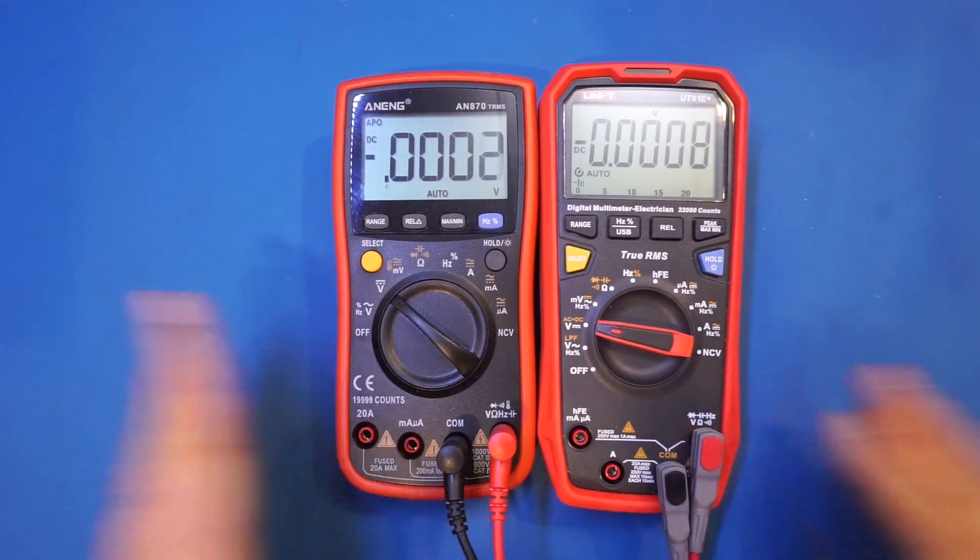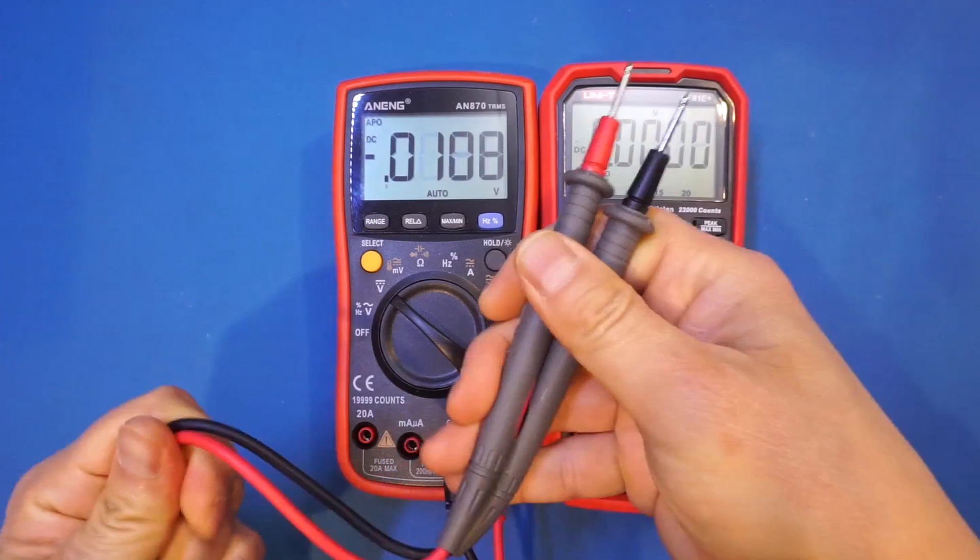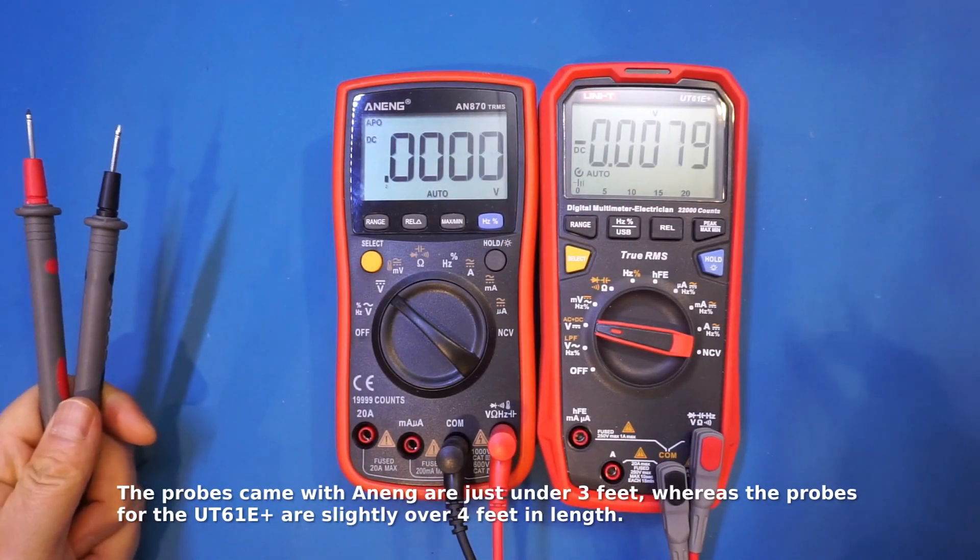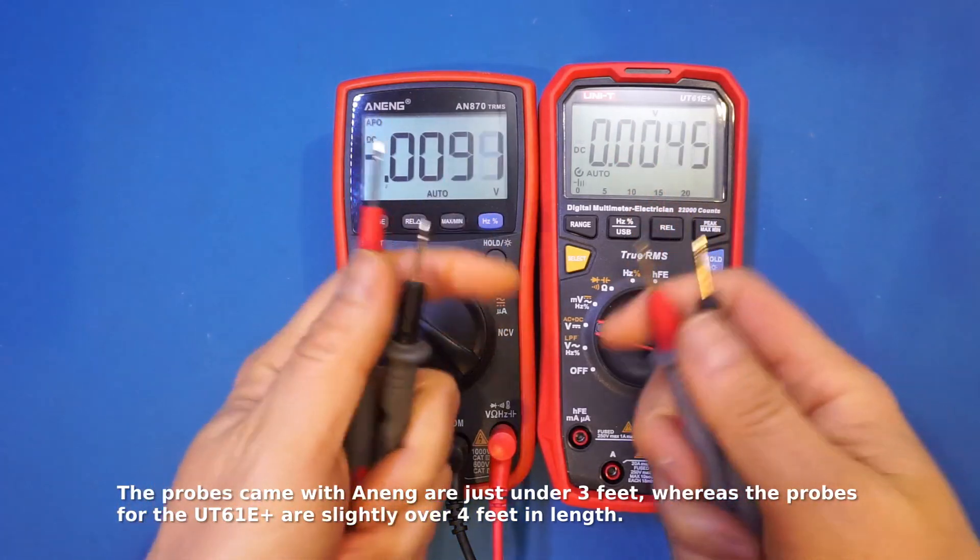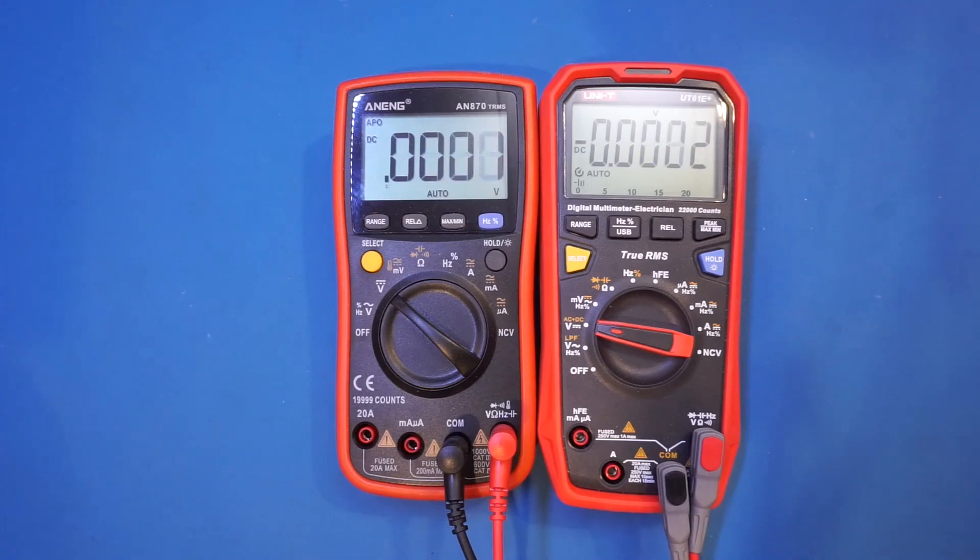Before I forget, let me comment on the probes that came with these meters. The AN-A70 came with very cheap feeling probes, whereas the UT61E comes with longer and also gold-plated probes. Certainly that's something to keep in mind when choosing between these two meters.